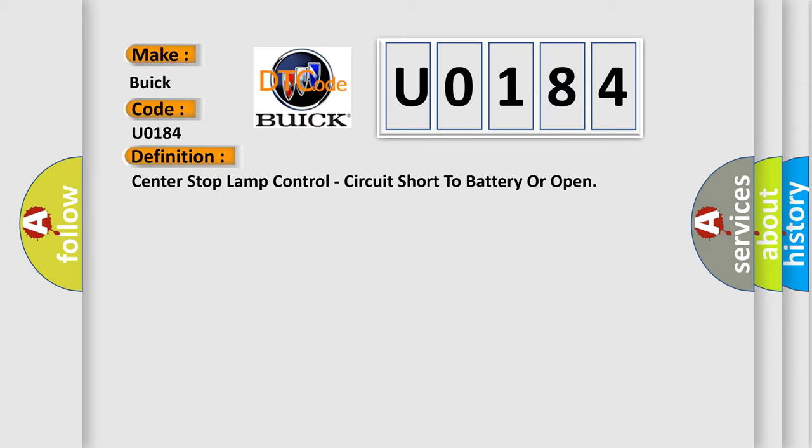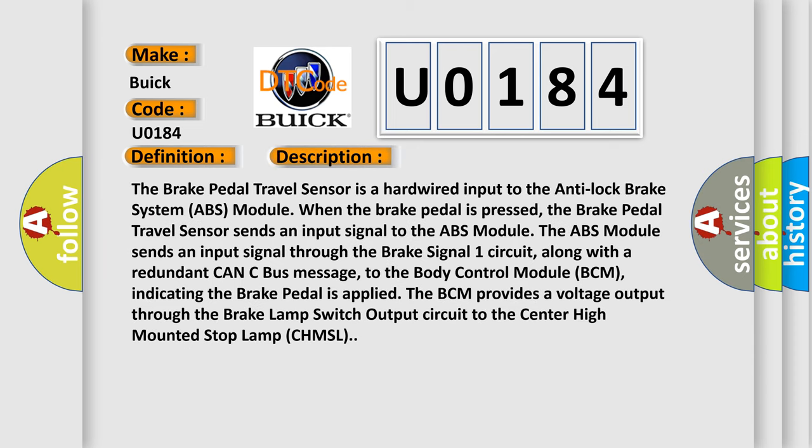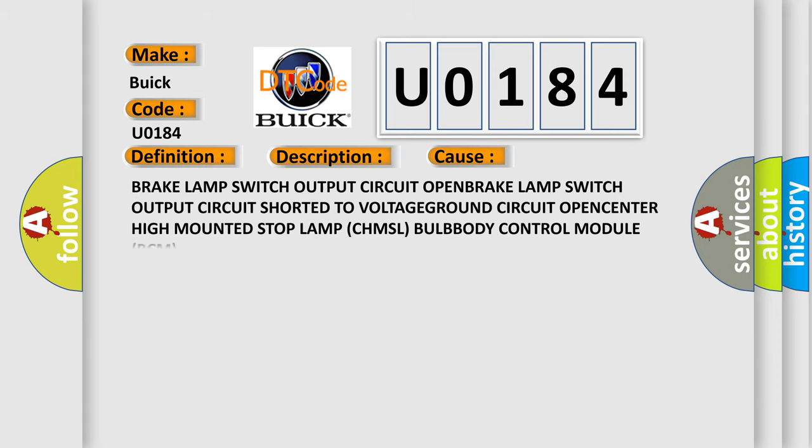Here is a short description of this DTC code. The brake pedal travel sensor is a hardwired input to the anti-lock brake system ABS module. When the brake pedal is pressed, the brake pedal travel sensor sends an input signal to the ABS module. The ABS module sends an input signal through the brake signal one circuit, along with a redundant CAN-C bus message, to the body control module BCM, indicating the brake pedal is applied. The BCM provides a voltage output through the brake lamp switch output circuit to the center high mounted stop lamp CHMSL. This diagnostic error occurs most often in these cases.